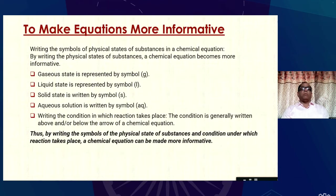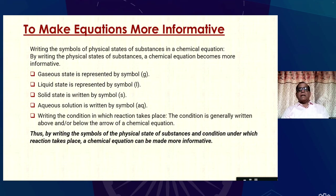To make an equation more informative, write the symbols of the physical state of each substance. Gaseous state is represented by (g), liquid state by (l), solid state by (s), and aqueous solution by (aq). The condition under which the reaction takes place is written above or below the arrow. By writing the physical state of substances and the conditions, a chemical equation can be made more informative.